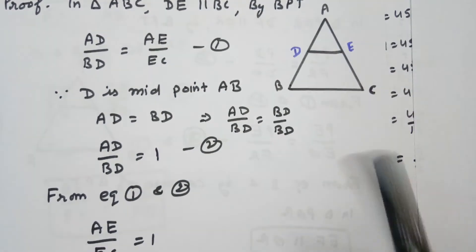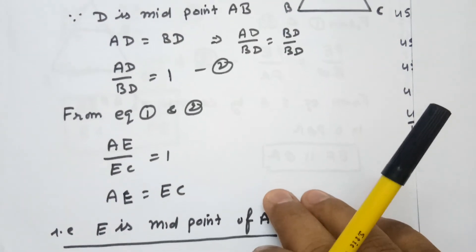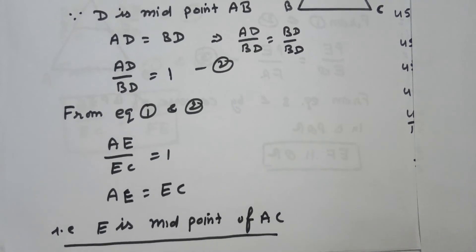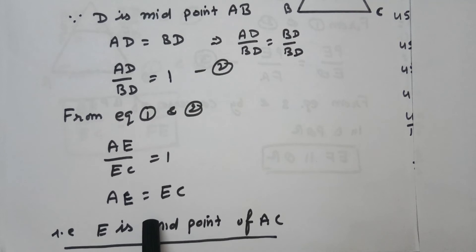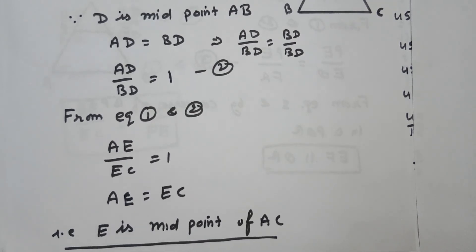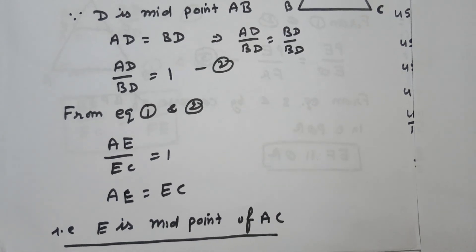Therefore, E is the midpoint of side AC because E divides AC into two equal parts. So that's why E is the midpoint of AC.